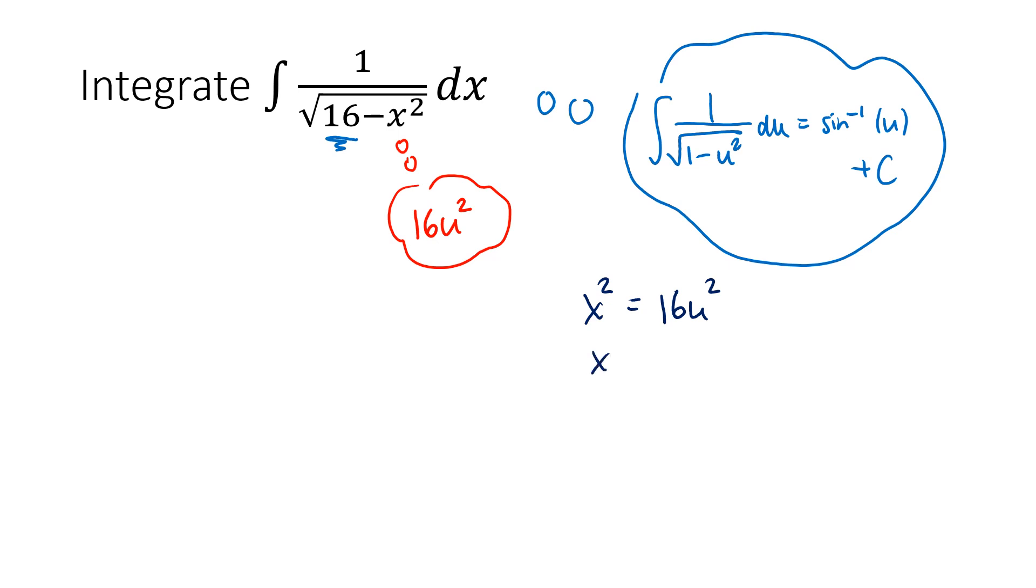So if we take a square root here, that's going to give us x equals 4u, or in other words, u equals x over 4. So this tells us the substitution that we need to do to get this to happen. We need u to be x over 4, which means du needs to be 1 fourth dx.